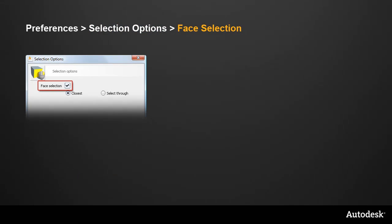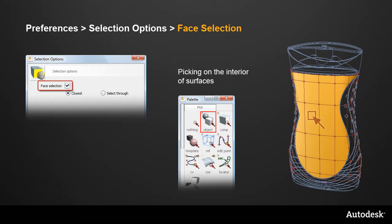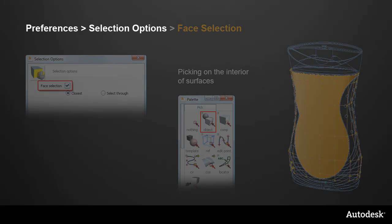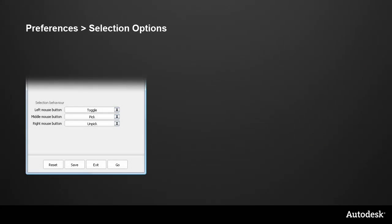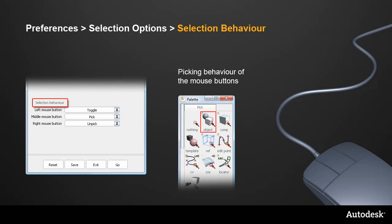At the top, there's face selection, which is used when picking surfaces, and now allows selection on the interior of a surface, as well as on the edges and isopalms. The second part of the option window sets the selection behaviour when picking with the mouse, and this allows us to customise the way the left, middle and right mouse buttons behave.